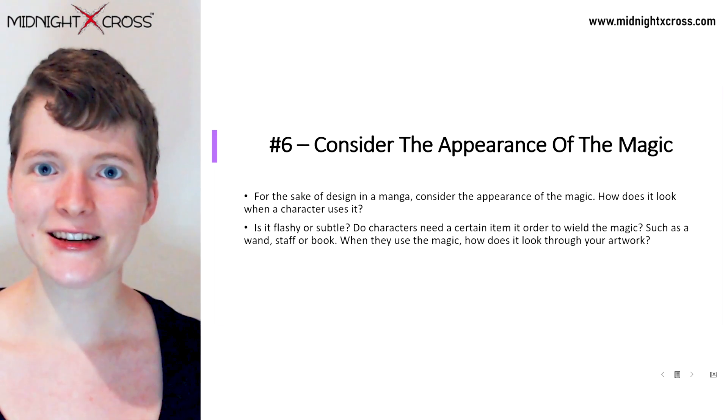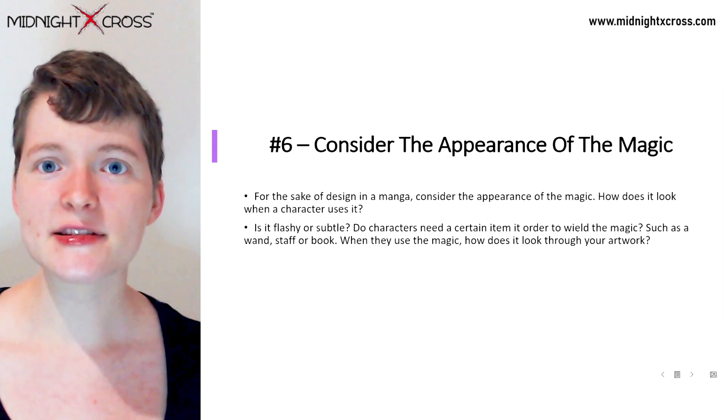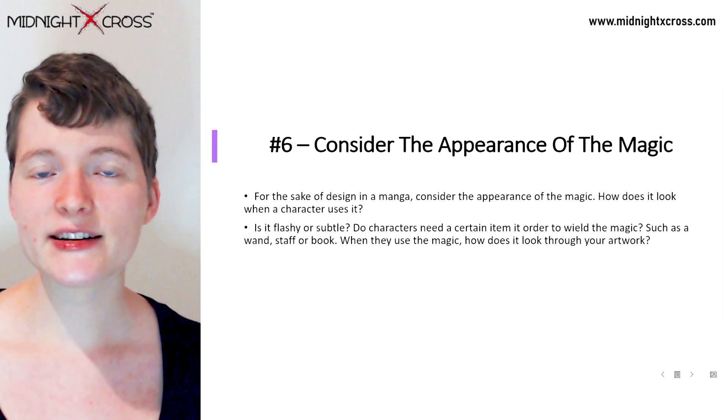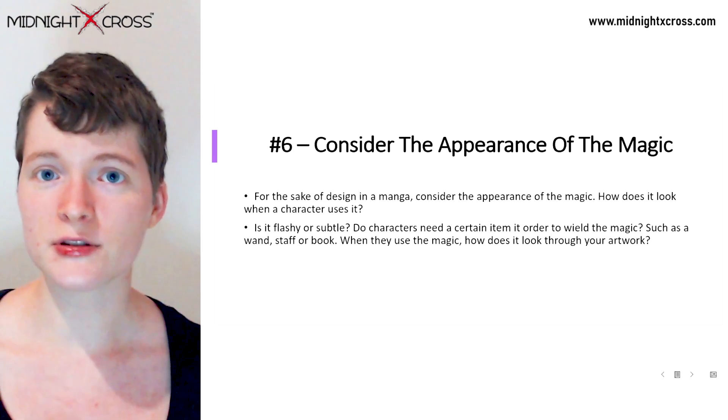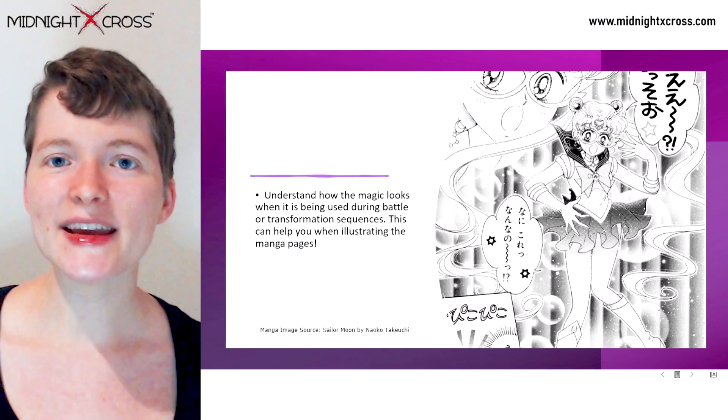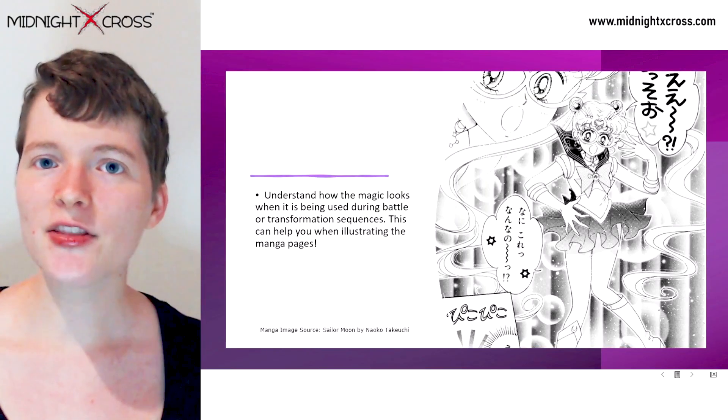Number six: consider the appearance of the magic. For the sake of design in a manga, consider how the magic looks when you draw it — do you draw it in a really detailed and powerful way or is it more subtle? Does your character need to use a certain item like a wand or a staff to wield the magic? I highly recommend researching other manga where characters use magical abilities. You may draw sparkles if your manga is bright and colorful, or you may simply show the results of using those abilities, such as leaving a lot of destruction. If you have transformation sequences, also consider how those might look when drawing them.